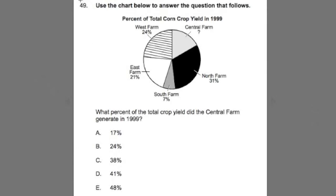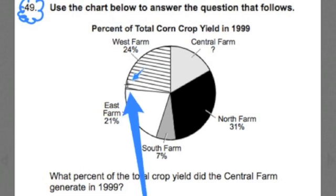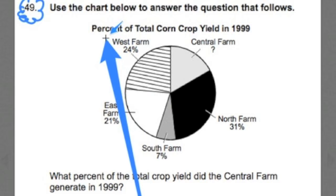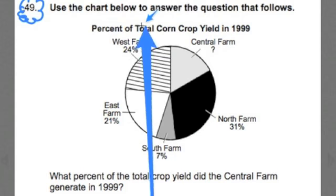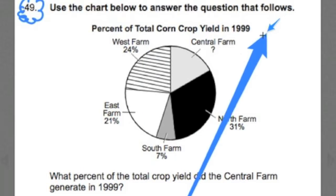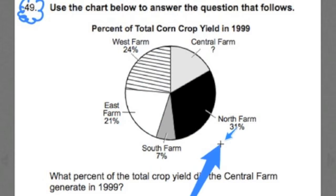Hi team, this is Chris Abraham from Go Math. Today we're going to work on number 49 on the CBEST Elementary Math Practice Test. It says, use the chart below to answer the question that follows. We've been looking at a whole series of problems with charts, tables, and graphs. The chart title reads: the percent of total corn crop yield in 1999, and it gives us information on the different percents for each different farm.